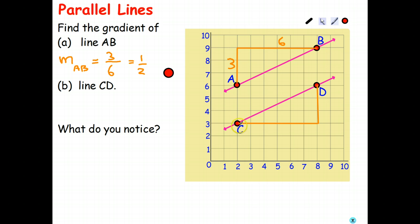Probably not too surprising when we find the gradient of line CD, the rise is 3, the run is 6. And the gradient of line CD is also 3 on 6, or also 1 half.